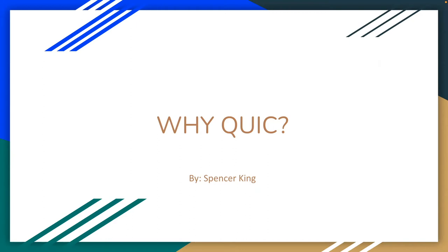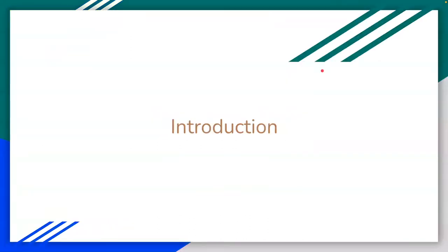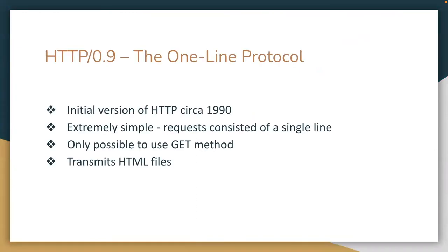So why QUIC? To understand this, we really need to understand how HTTP has evolved over the years, and to do that we will start with HTTP 0.9. This is HTTP in its infancy, circa 1990. It was extremely simple — requests consisted of a single line, the only possibility was the GET method, and it really was just to transmit HTML files.